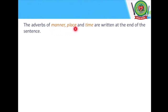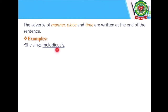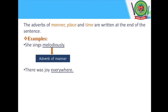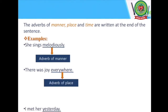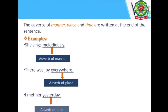Before joining sentences, let us understand the positioning of adverbs. The adverbs of manner, place, and time are written at the end of the sentence. Examples: 'She sings melodiously' — 'melodiously' is an adverb of manner. 'There was joy everywhere' — 'everywhere' is an adverb of place. 'I met her yesterday' — 'yesterday' is an adverb of time. So adverbs of manner, place, and time are placed at the end of the sentence.